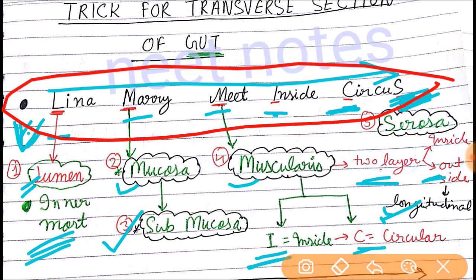Lena Mary meet inside circus. L for lumen, M for mucosa, and M for muscularis. I for inside and C for circular. Inside is circular and outside is longitudinal that you need to remember. And S for serosa, which is the outermost layer.